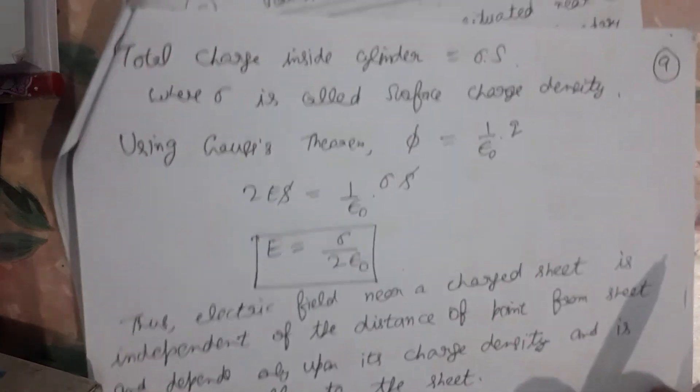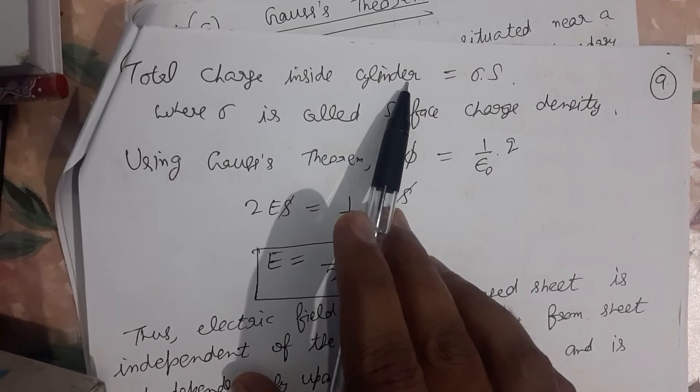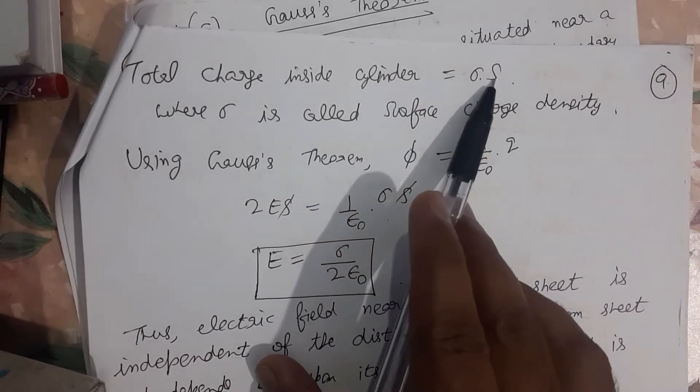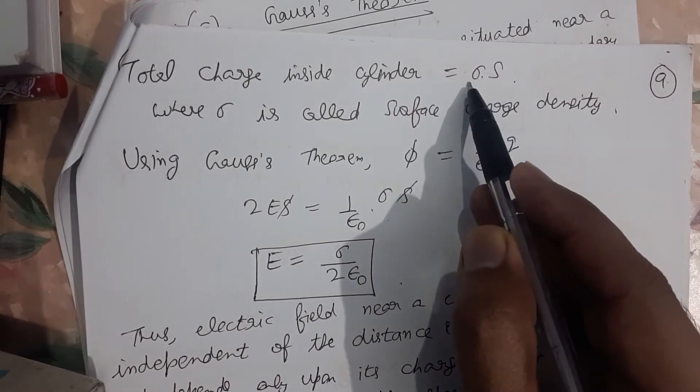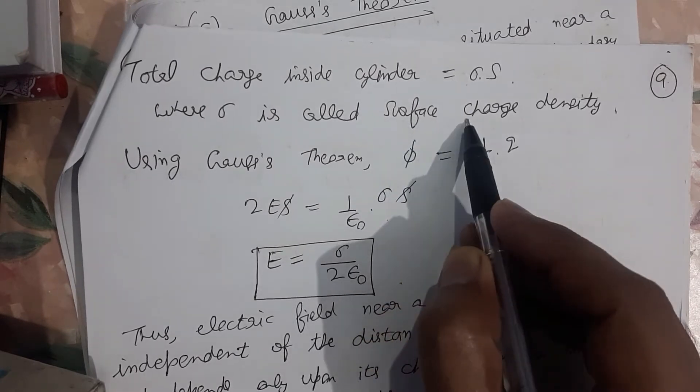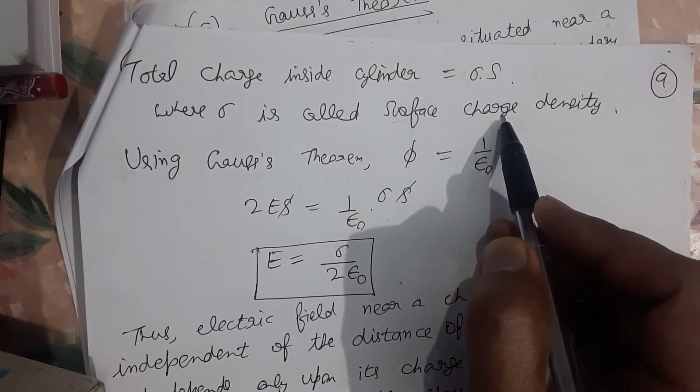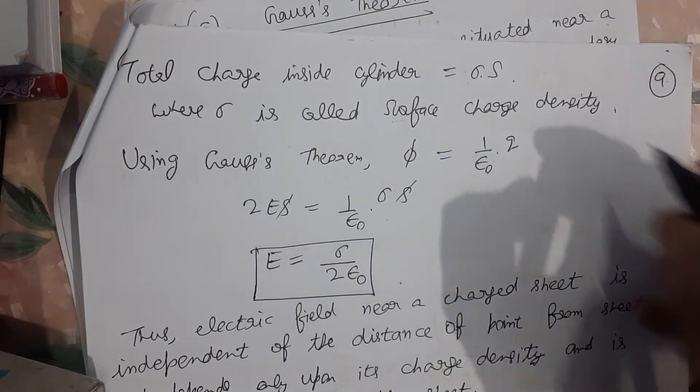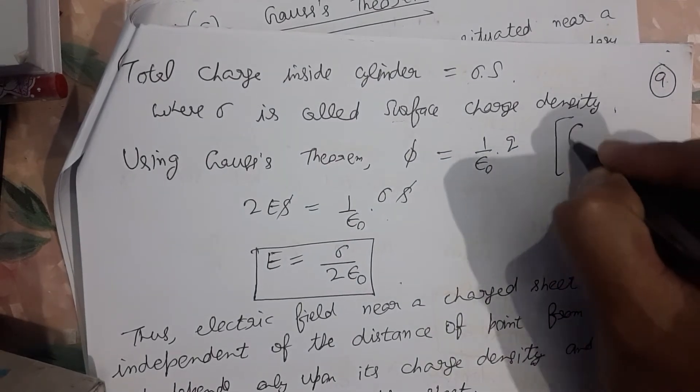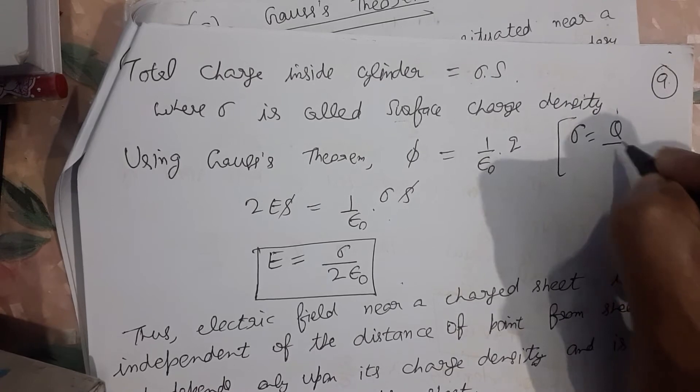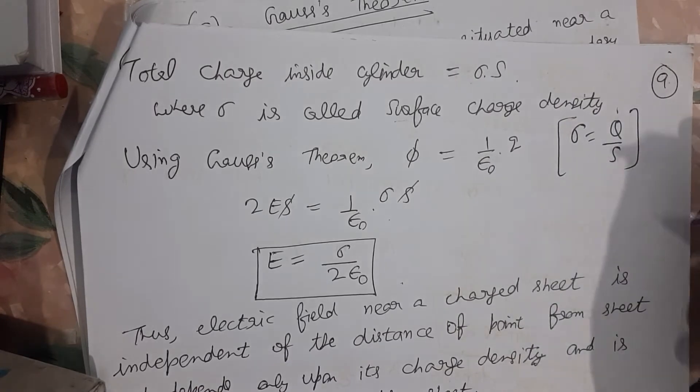Total charge inside the cylinder is sigma into s. Here sigma is known as surface charge density. It is defined as charge over area. That is, sigma equals charge over area.